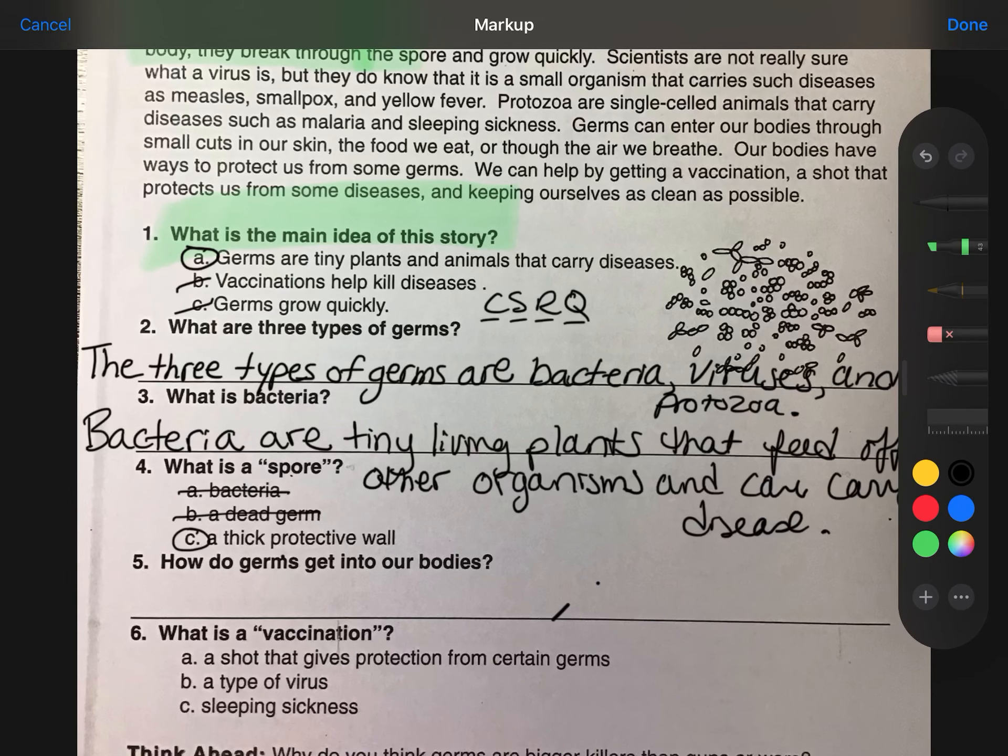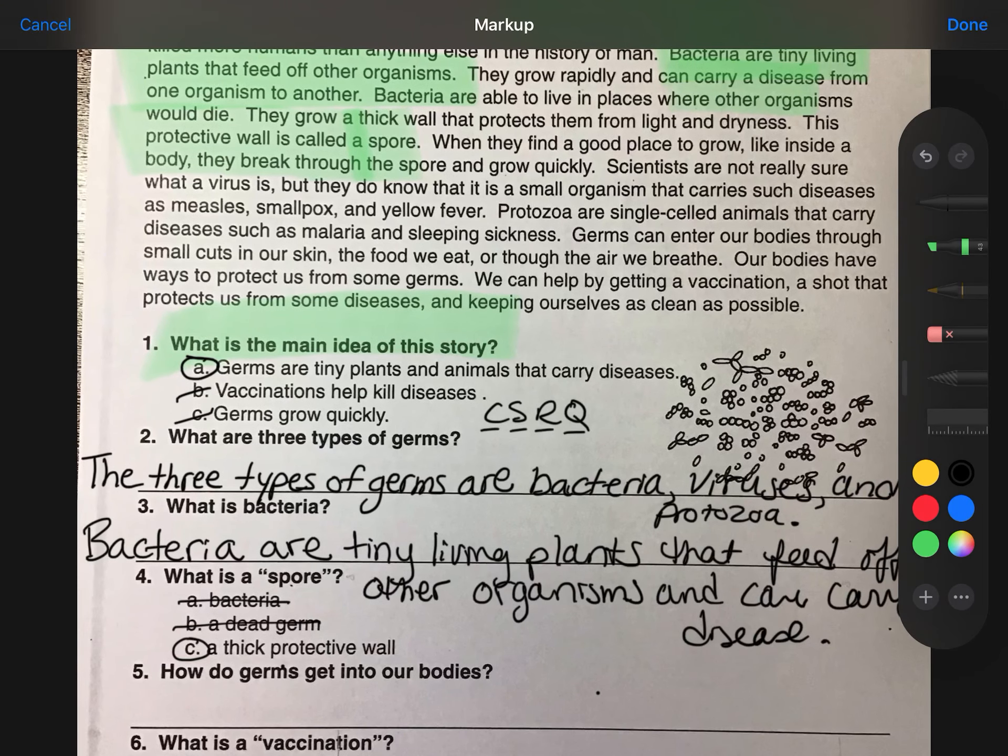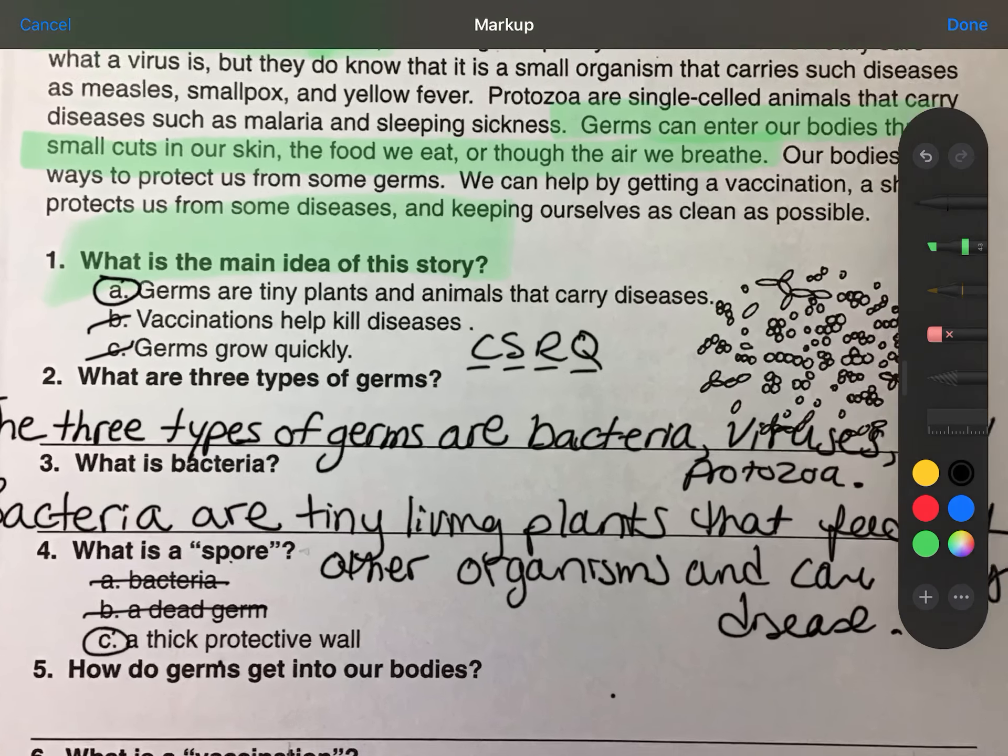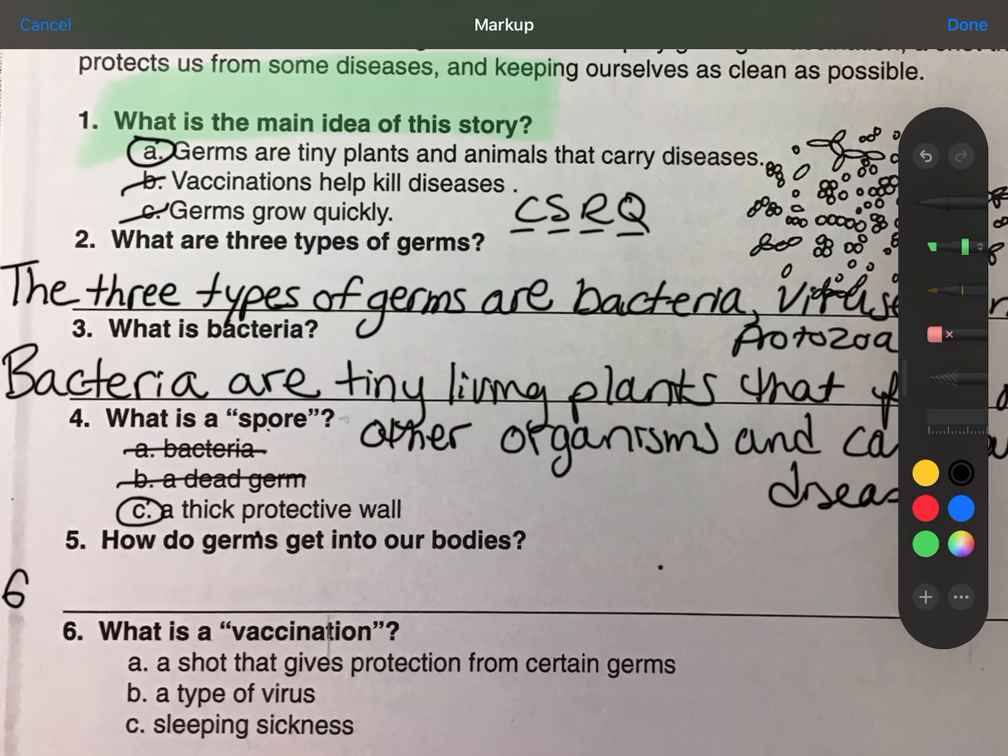How do germs get into our bodies? Come over here. I skimmed for germs. Germs can enter our bodies through small cuts in our skin, the food we eat, or through the air we breathe. Remember to restate. Germs can get, I know I go back from print and cursive, but I'm trying not to make as much noise with the pen. Germs can get into our bodies.